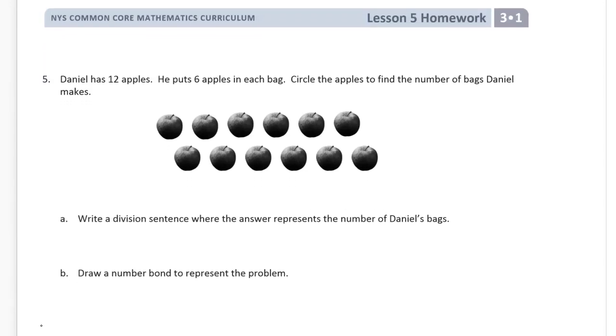Now, number five. Daniel has 12 apples and he puts six apples in each bag. Circle the apples to find the number of bags that Daniel makes. We're going to circle groups of six. One, two, three, four, five, six. There's a bag. And then we can see here, this is another, this is going to be another six. Right here we have, we've circled the apples.